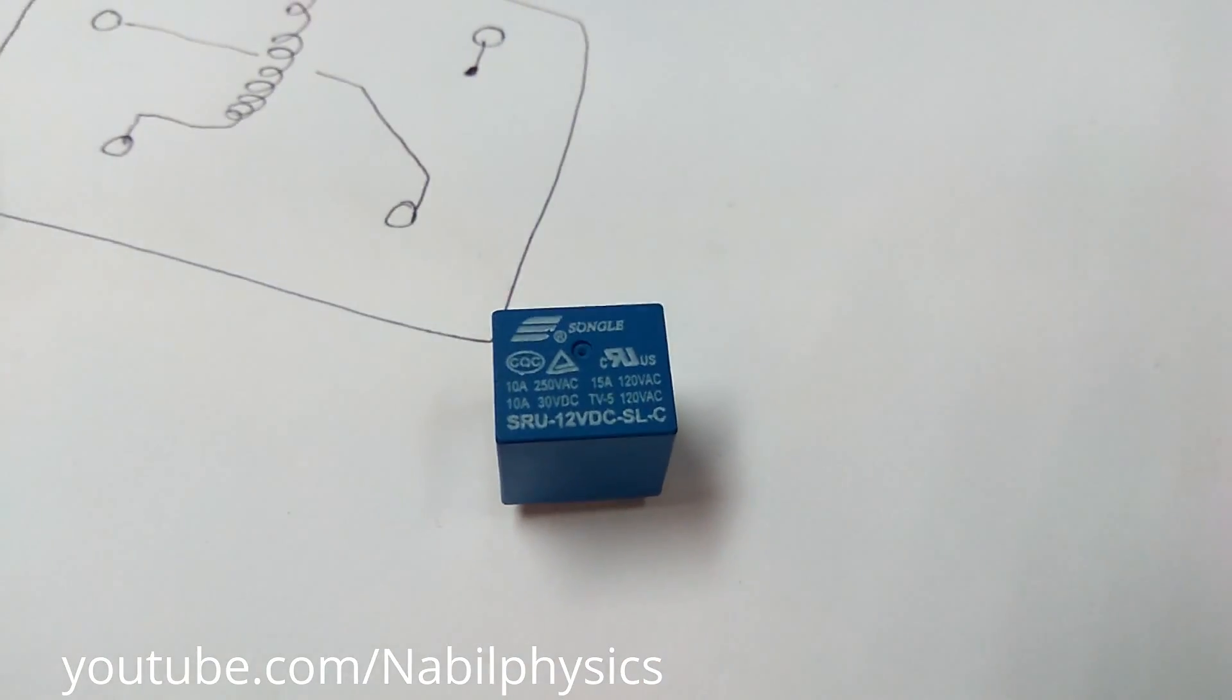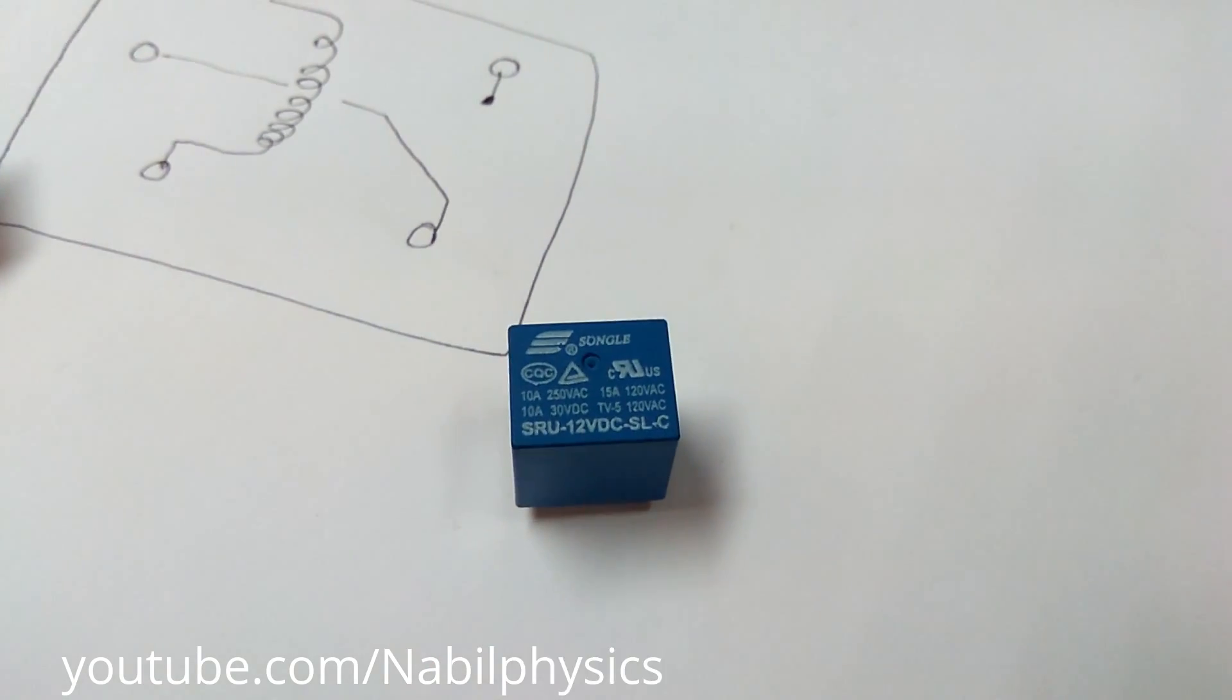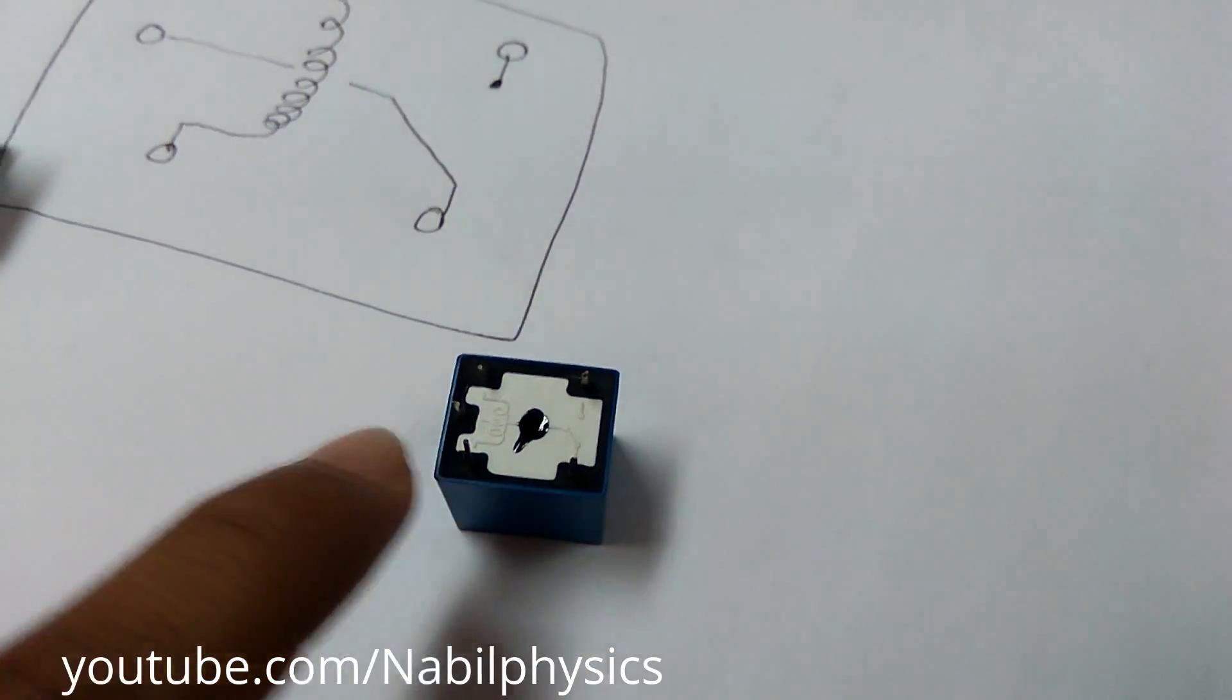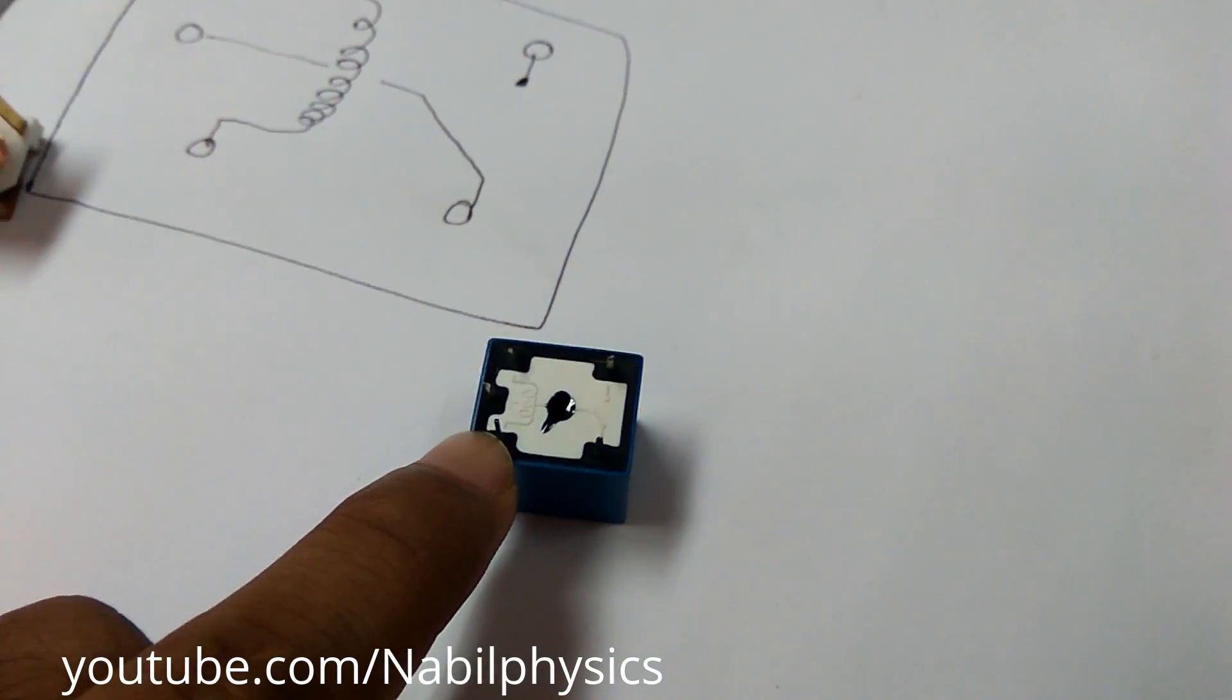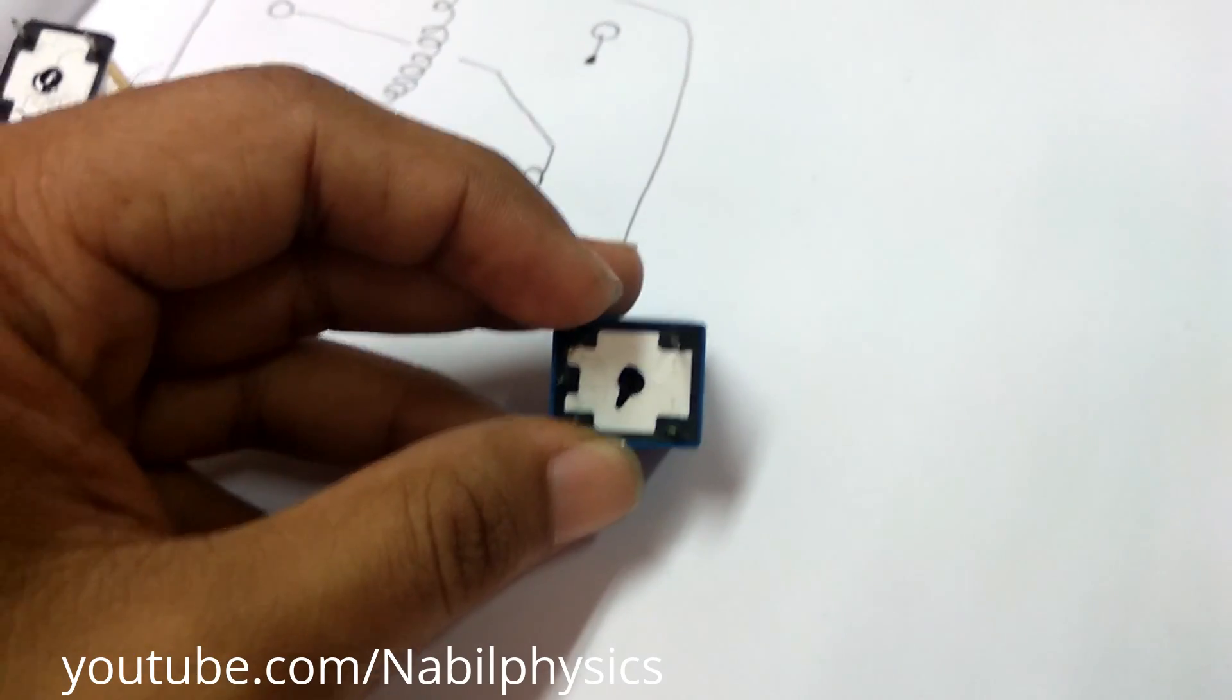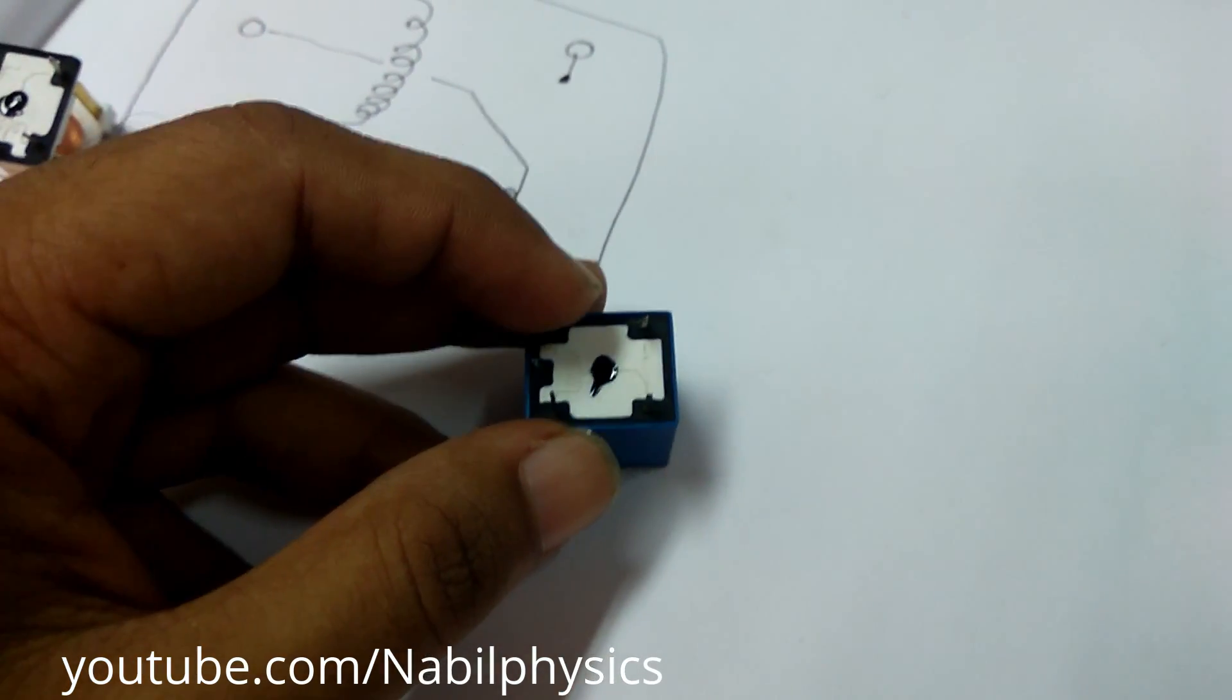And here you can see the model number SRD-12VDC. That means the coil, every relay has a coil, and this coil between these two pins of this relay, you have to give at least 12 volt for its full functionality.